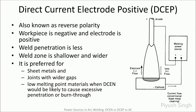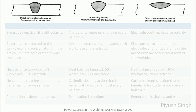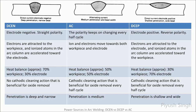Let us conclude by comparing DCEN, AC and DCEP. As discussed earlier, the arc root or cathode spot where the emission occurs is highly mobile in AC or DCEP, and as a result the arc is much less stable than in DCEN. AC behaves as DCEN in one half cycle and DCEP in the other half cycle. As a result, both the workpiece and the electrode are struck by electrons and ions in alternate half cycles.